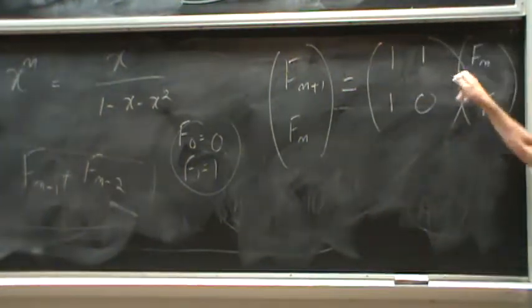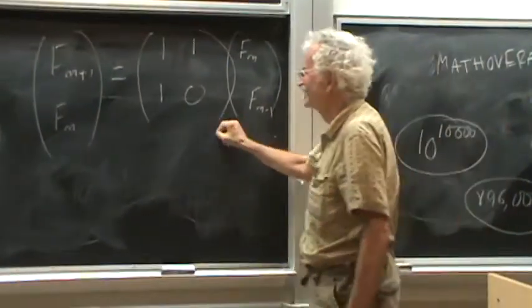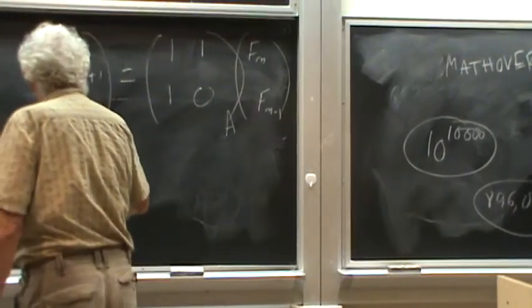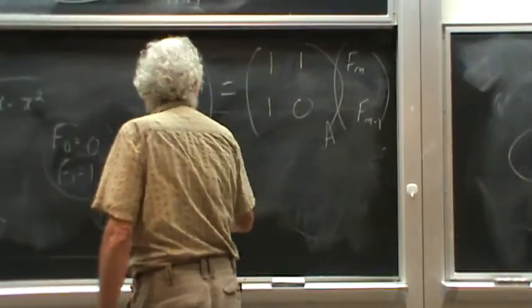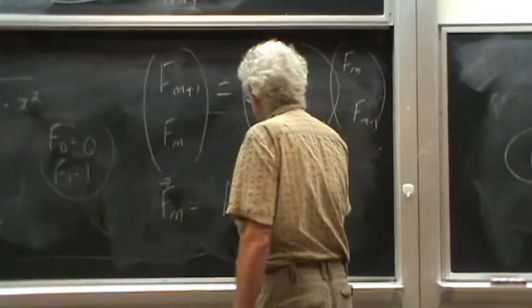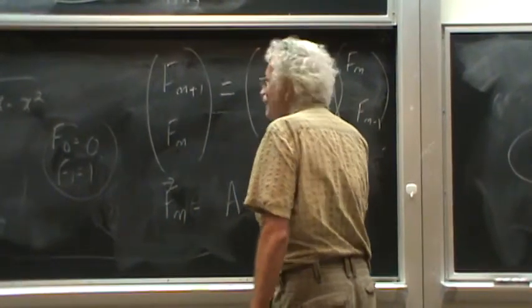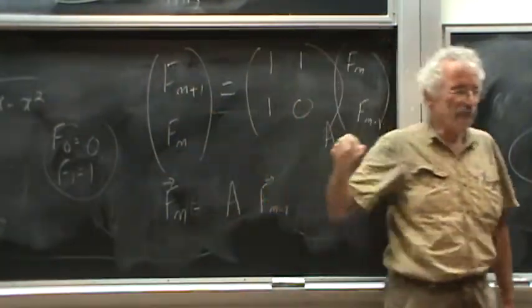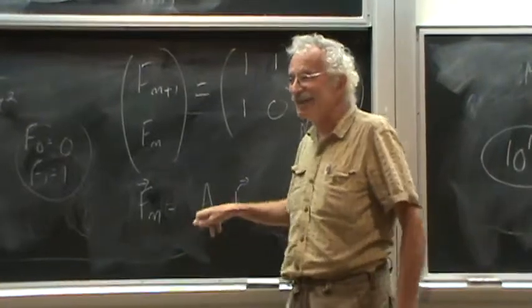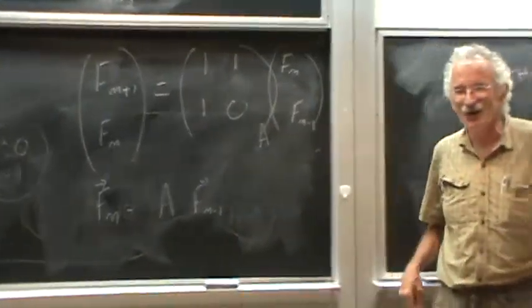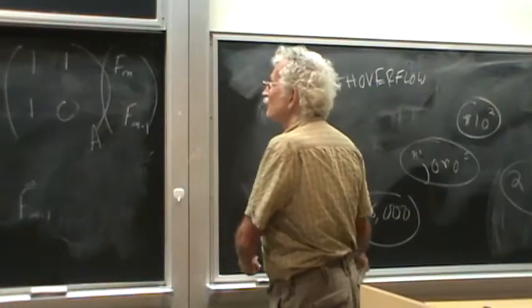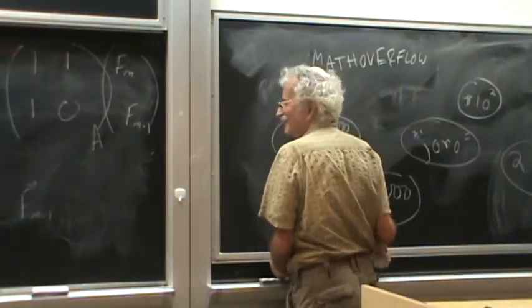Okay, this matrix. Let's call it A. So this vector, let's call it bold x sub n, equals A times bold x sub n minus 1. Now the same trick of repeated exponentiation, you can do for matrices. And once again, we have it in poly log time. And now A is 2 by 2. Before it was 1 by 1. Now it's 2 by 2.